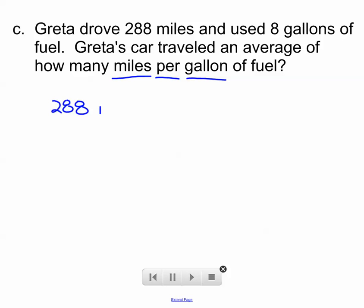So I'm going to set this up like a fraction. 288 miles per 8 gallons. Per and a fraction bar or division, same thing. So we need to simplify this fraction.